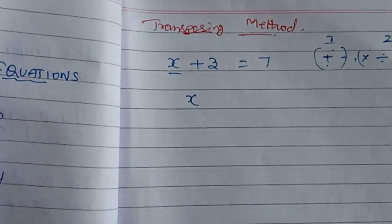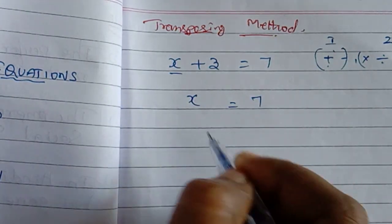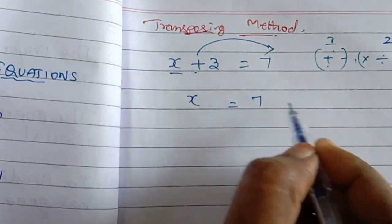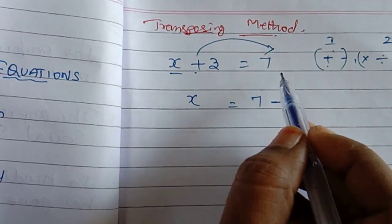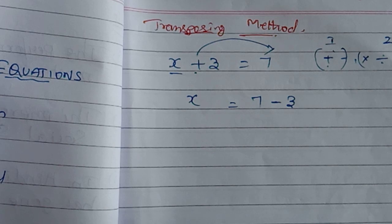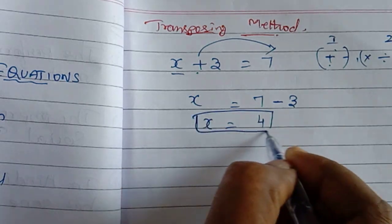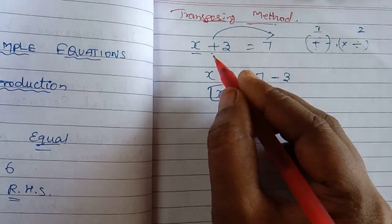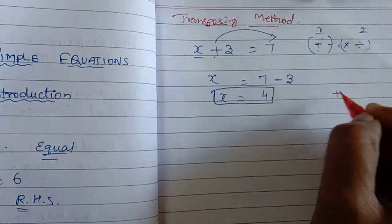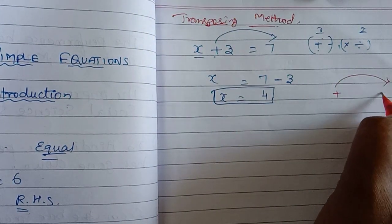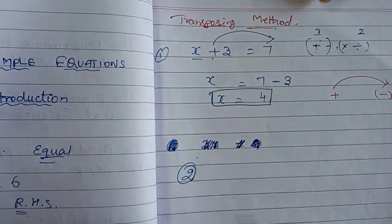Let's find out — X will be on one side. In this case, X plus 3 equals 7. When we transpose, plus 3 moves to the RHS and becomes minus 3. So X is equal to 7 minus 3, which gives X equals 4. For the second example, X minus 6 equals 14. Transposing minus 6 to the RHS makes it plus 6, so X equals 14 plus 6, which is 20.